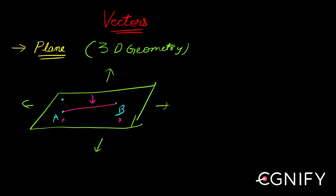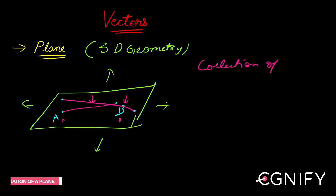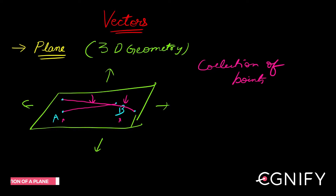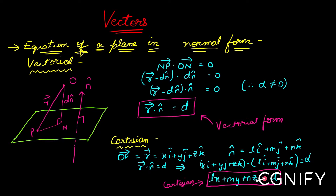This is valid for any two points. If I pick any two points and join them, they must lie on the same surface. Such a collection of points basically forms your plane. Now there are various ways in which I can write the equation of this plane — there's the equation of a plane in normal form, and then two more cases we will look at.